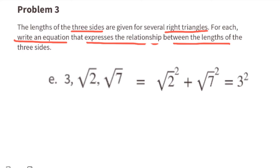E: The square root of two squared plus the square root of seven squared equals three squared. This works because two plus seven equals nine.